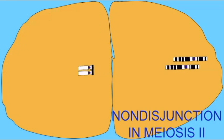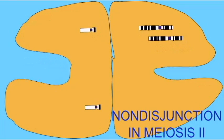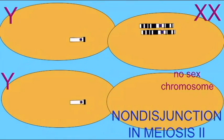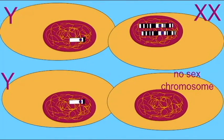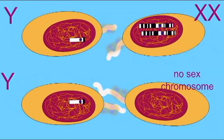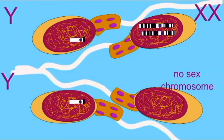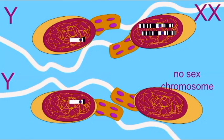One of these abnormal gametes will possess no sex chromosomes at all, while the other will possess two, in this case two X chromosomes, although it could also be two Y chromosomes in other cases.